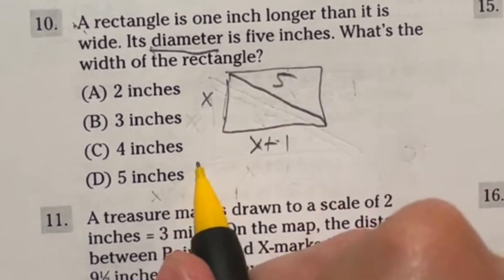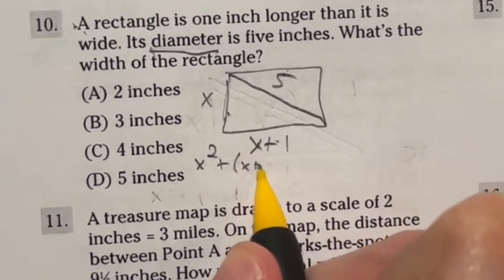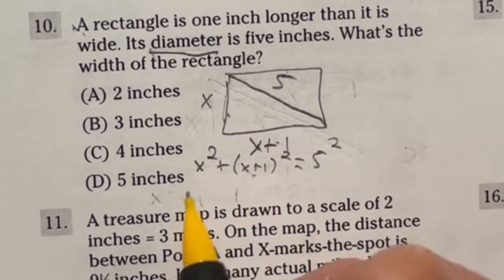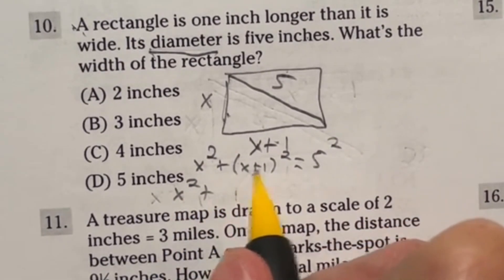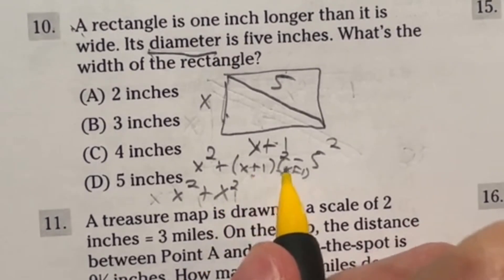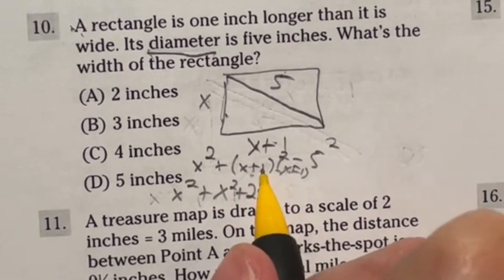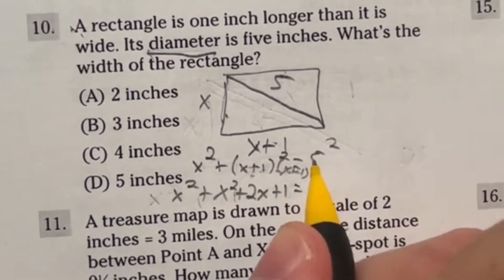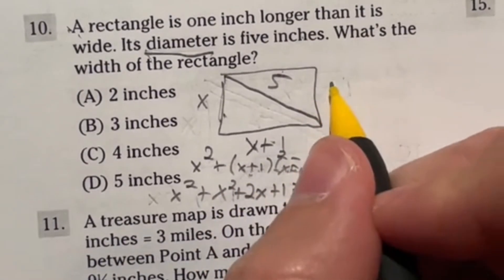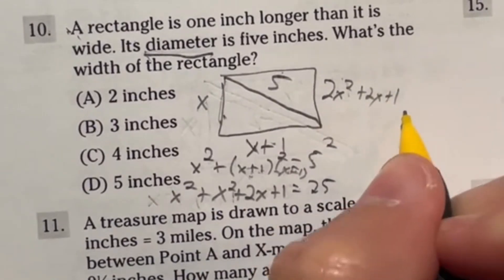What's the width of this rectangle? This is actually a Pythagorean theorem question where A squared plus B squared equals C squared. Let's fill that in. X squared is this side plus B squared, which is X plus one all squared, equals five squared or the diagonal. So we have X squared plus, this is two of these multiplied. X times X gives X squared. Then X times one gives X and one times X gives another X. So that's plus two X. And one times one is plus one. That equals 25.